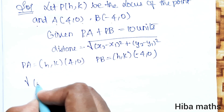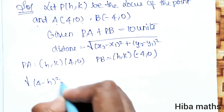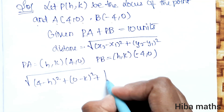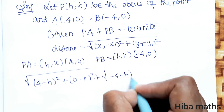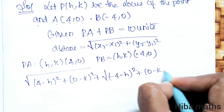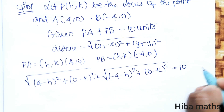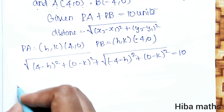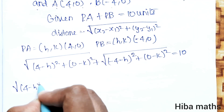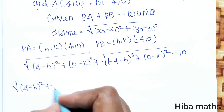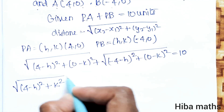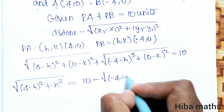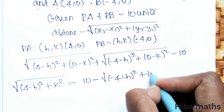The distance PA equals root of (4 minus h) whole square plus (0 minus k) whole square, which is root of (4 minus h) whole square plus k square. This equals 10 minus root of (minus 4 minus h) whole square plus k square.